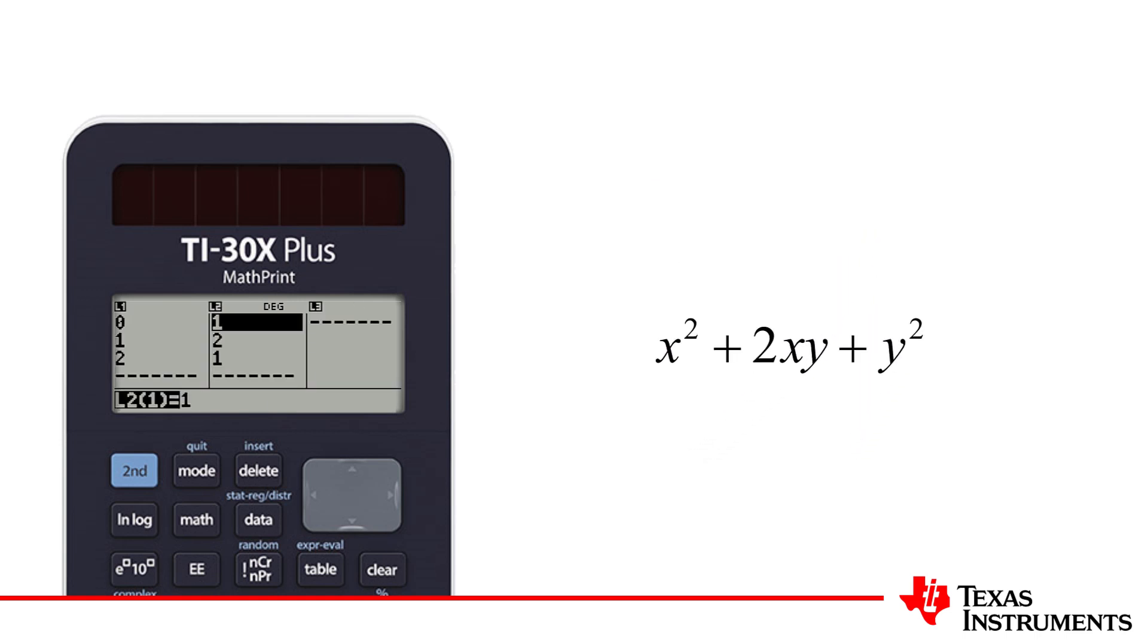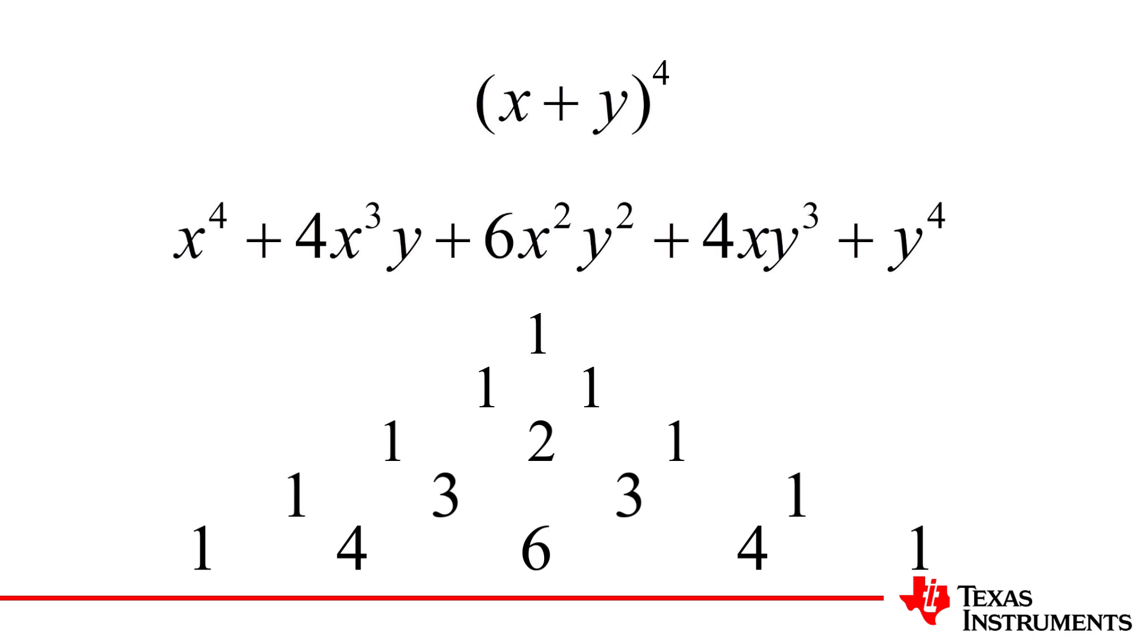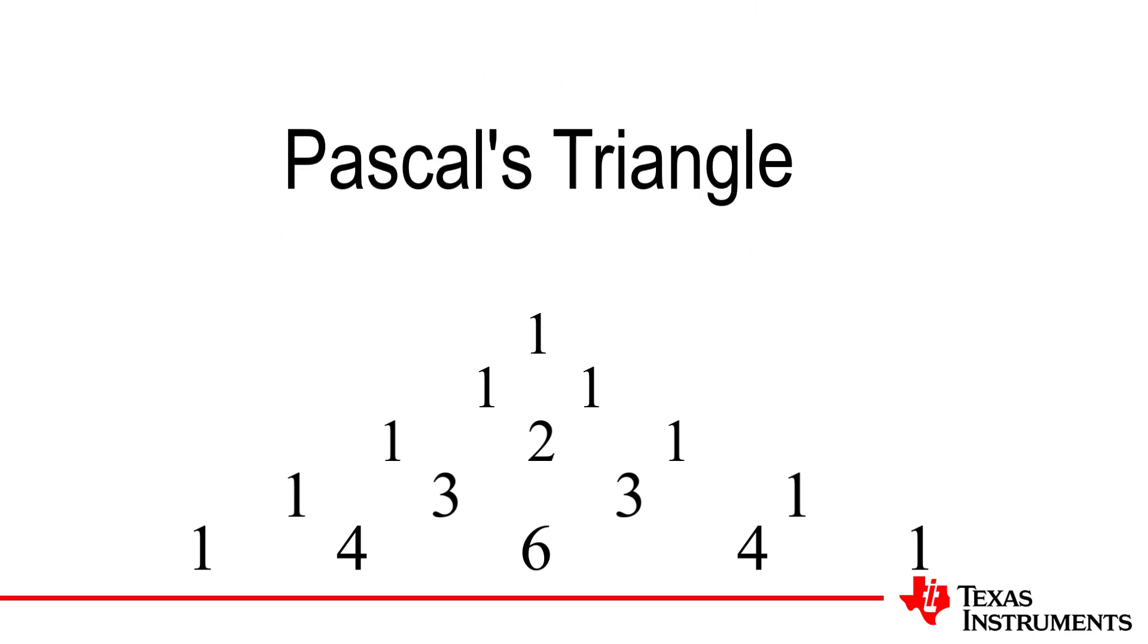Let's start by considering the general expression, x plus y to the power of n. As we increase the power of n, starting with n equals 0, patterns start to emerge. Focus your attention on the coefficients. The coefficients align with the rows in Pascal's triangle.